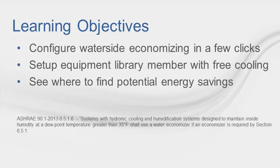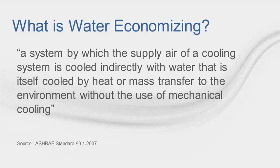It's worth noting that ASHRAE Standard 90.1-2013 requires waterside economizers for systems with hydronic cooling and humidification systems designed to maintain a dew point greater than 35°F, when an economizer is already required per Section 6.5.1. ASHRAE defines a water economizer as a system by which the supply air of a cooling system is cooled indirectly with water that is itself cooled by heat or mass transfer to the environment without the use of mechanical cooling. In short, it's a system that lets you run your compressor less, or even not at all, during periods where conditions are favorable.